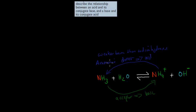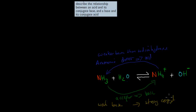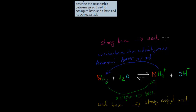NH₃ is a relatively weak base, and it can often produce a stronger conjugate acid. What it definitely does is produce a stronger conjugate acid than a strong base would, because a strong base such as sodium hydroxide always produces a very weak conjugate acid.